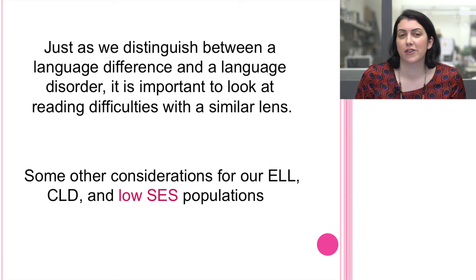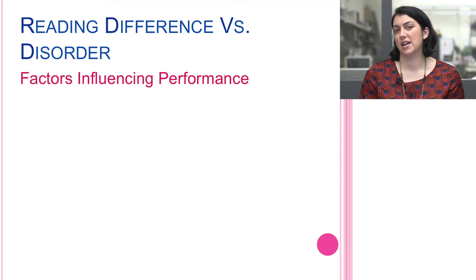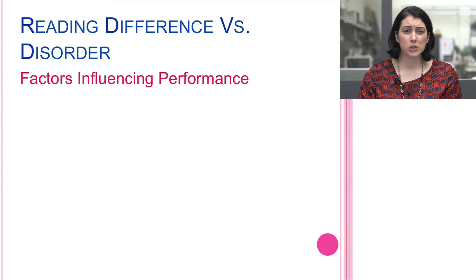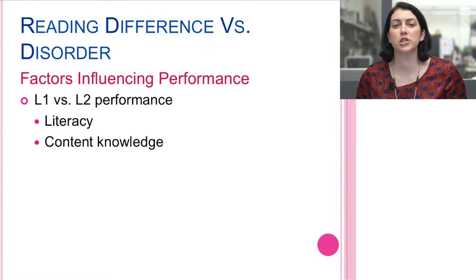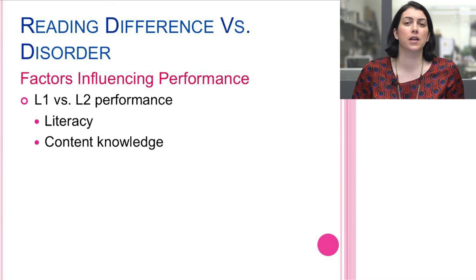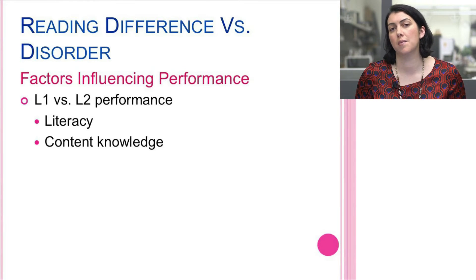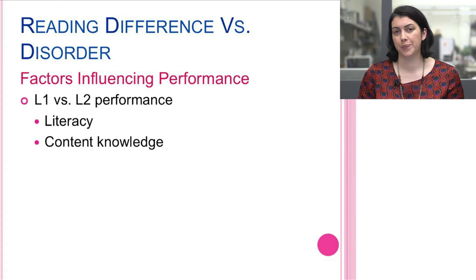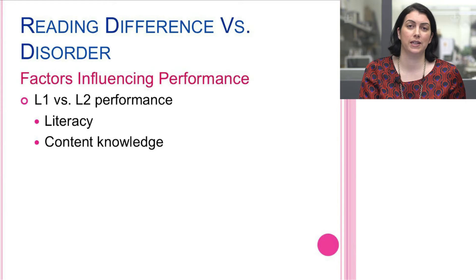Reading difference versus disorder — there are a lot of factors that influence performance. I want you to be conscious and thinking about these things with each of our students as we question: what is the primary hurdle preventing our students from becoming independent readers? Because once we can isolate that primary hurdle, we can intervene appropriately.